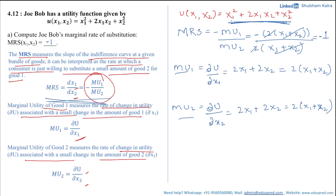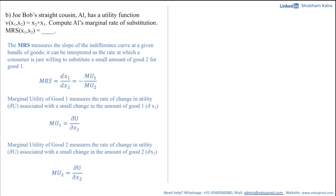Note that MRS was initially expected to be a function of x1 and x2, but here we get a constant. This means the consumer is willing to substitute good 2 for good 1 at a fixed rate of exchange of −1, that is, 1 unit of good 2 for 1 unit of good 1. I'm using calculus here because it makes calculation very easy — I recommend revising your calculus if needed.